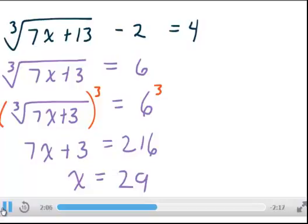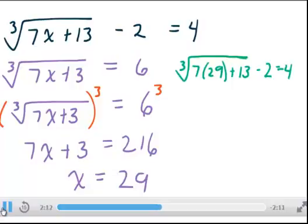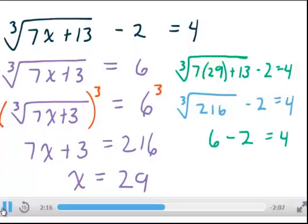Now we need to check. Is that number 29 a solution to the original equation? So we'll plug it in and simplify until we determine. In this case, yes, it is. It checks. So our solution set is 29.